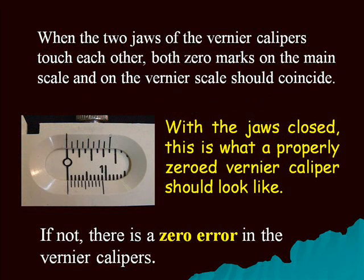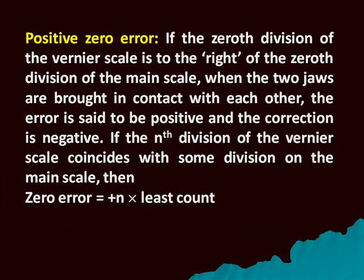When the two jaws of the vernier calipers touch each other, both zero marks on the main scale and on the vernier scale should coincide. As shown in the figure, that is what a properly zeroed vernier caliper should look like. If not, there is a zero error in the vernier calipers.